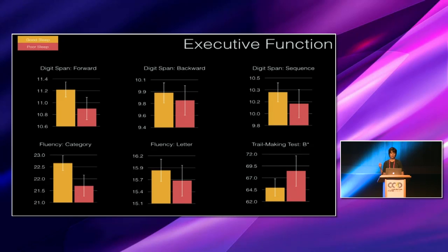Participants also completed an hour-long battery of cognitive tests that covered three main cognitive domains. So our tests of executive function included digit span, fluency, and trail-making test B. And you can see that the poor sleepers shown in red tended to perform worse in all of the tests, and the star on the trail-making test B indicates that higher scores represent worse performance. But there were no significant differences between the groups when we did the stats.